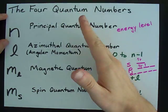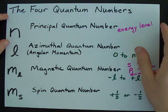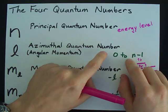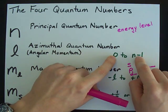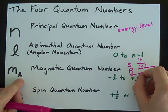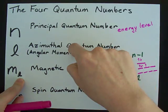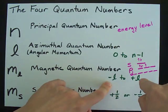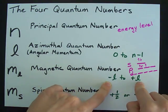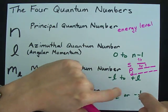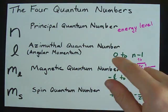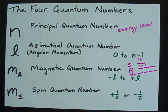n has to be one, two, three, four, five, something like that. l goes up to whatever n is from zero to n minus one. The magnetic quantum number, whatever l is, it's minus that to plus that, including zero. And the spin quantum number is either one of these two because you can only jam two electrons in each orbital. Best of luck!